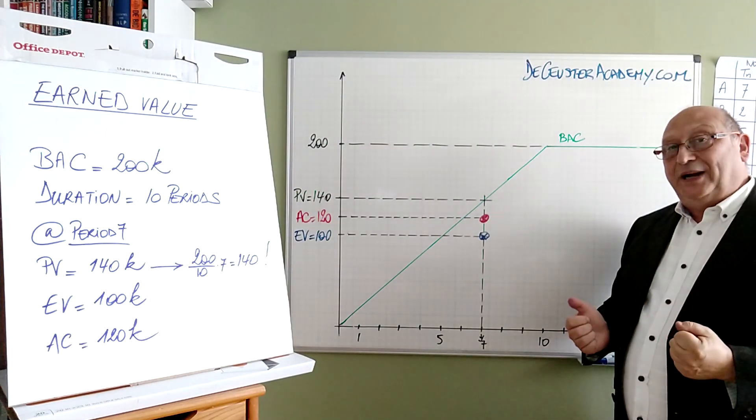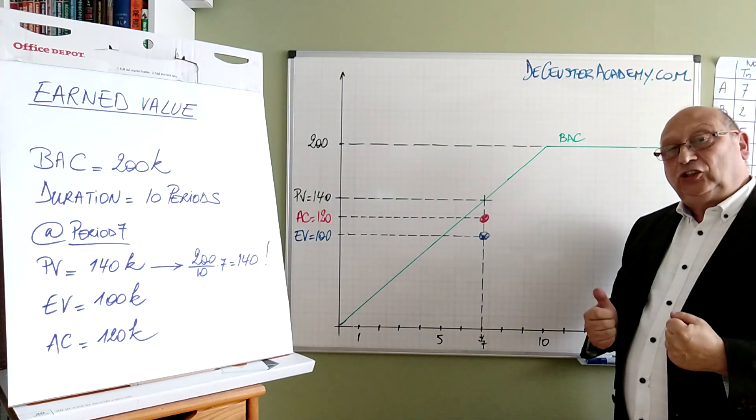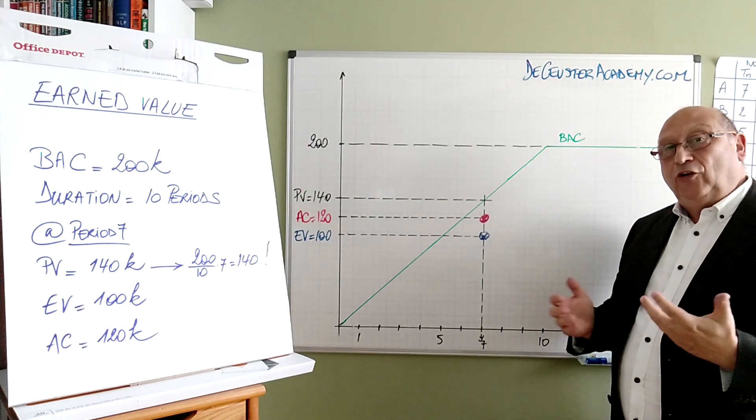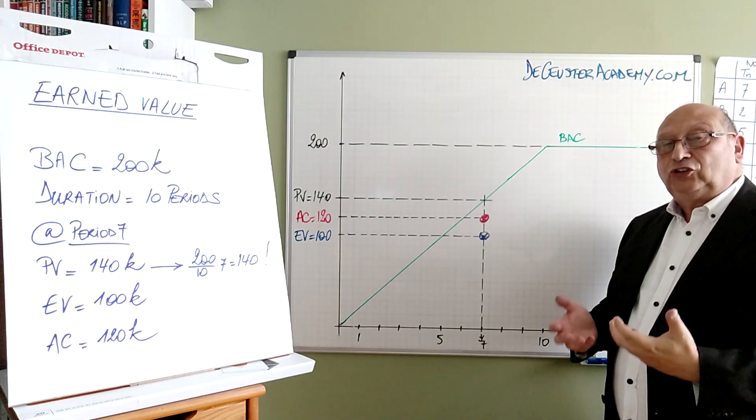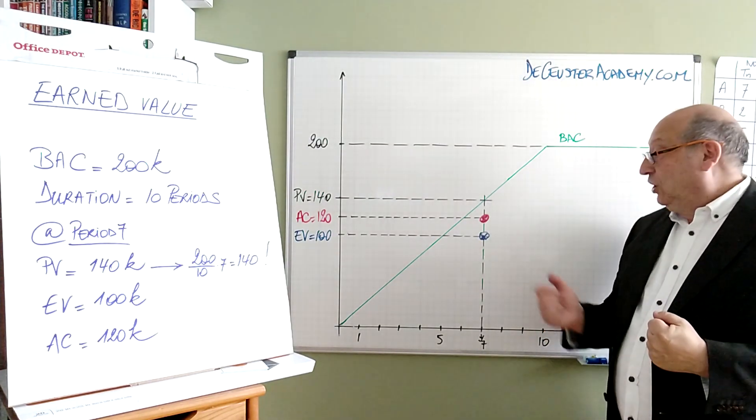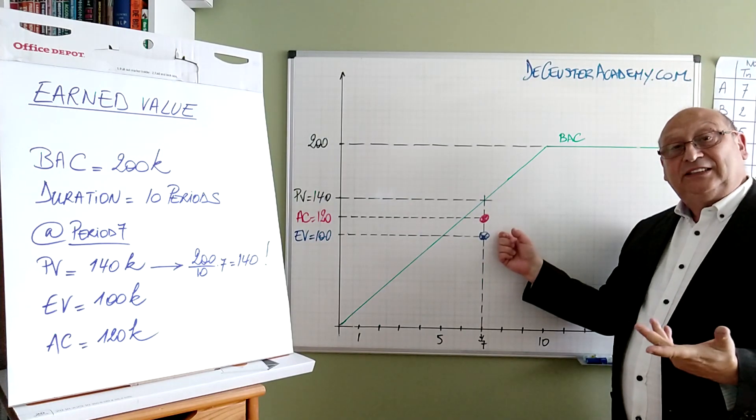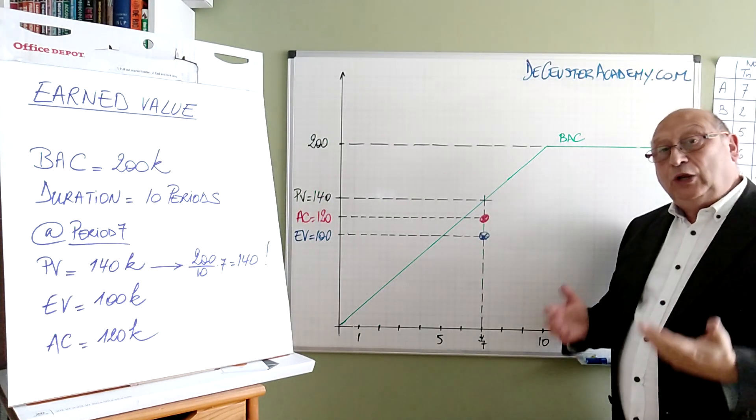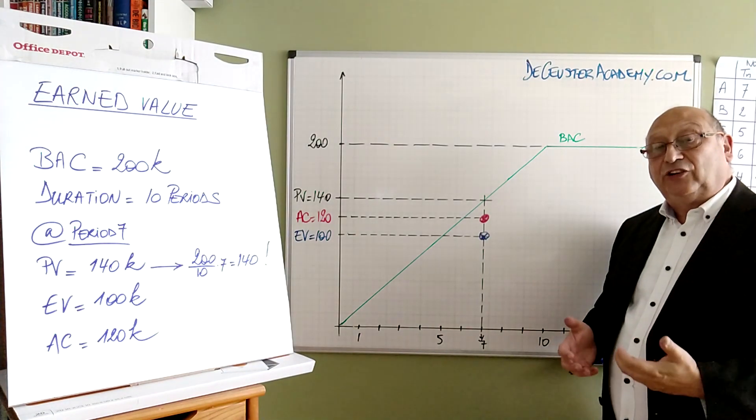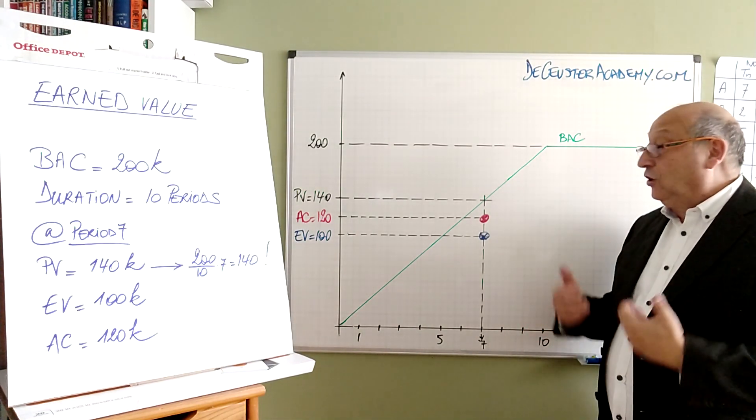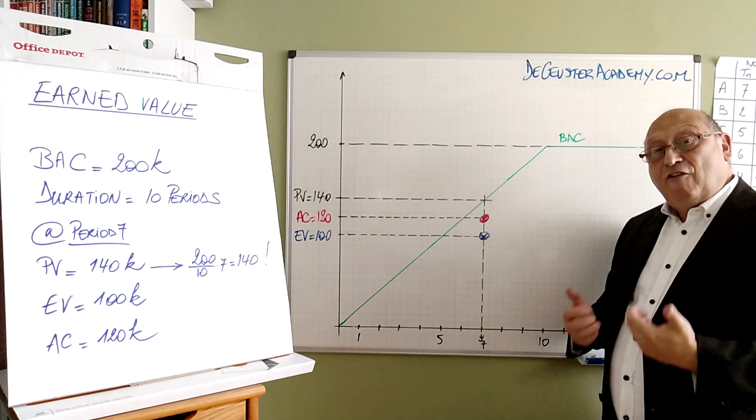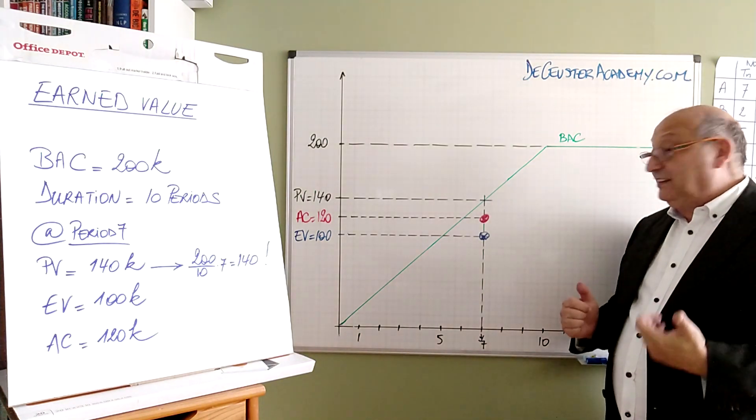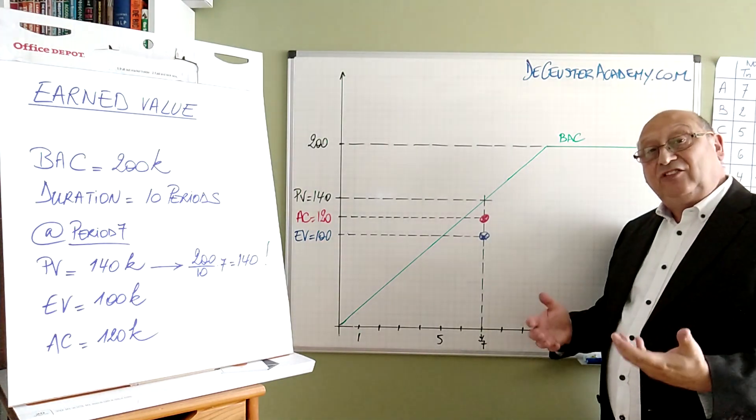And in earned value management we add some additional parameters. The additional parameter is earned value. And this is the cost of the deliverables that we created up to period 7. And we see on the table we have only 100k of deliverables that we created. We planned to make deliverables for a value of 140k. But we didn't. Basically this means that we are behind schedule.